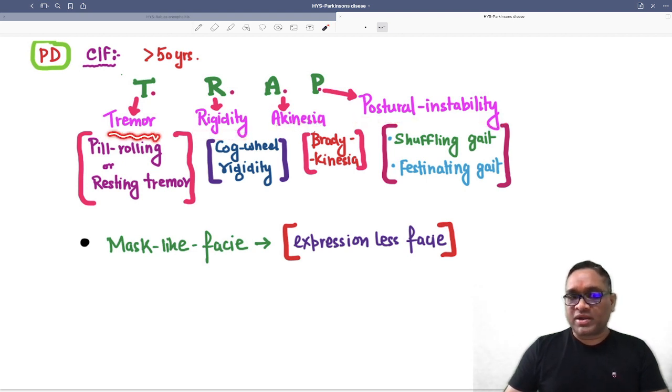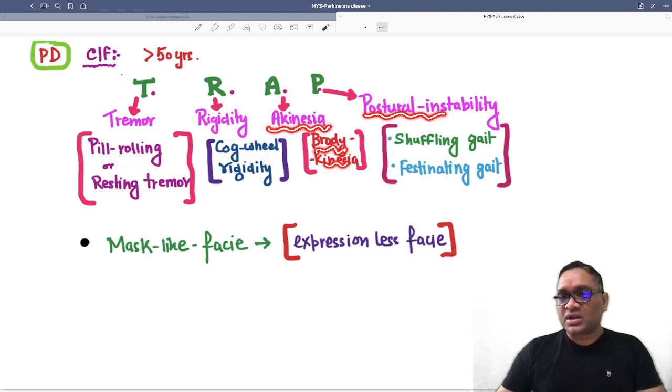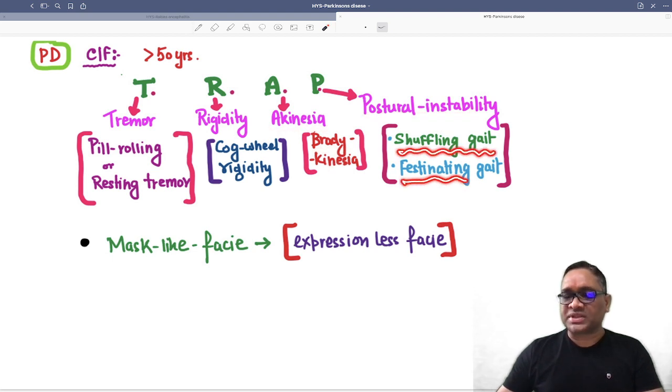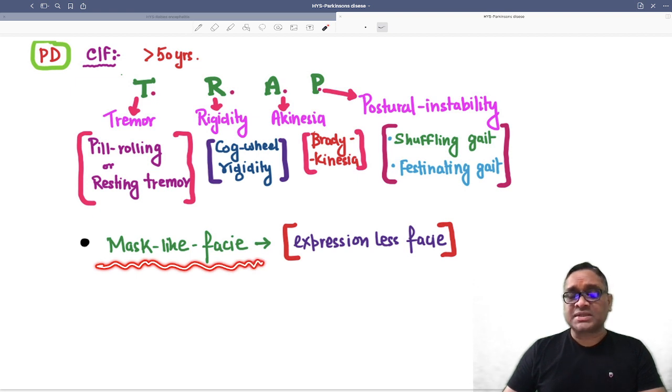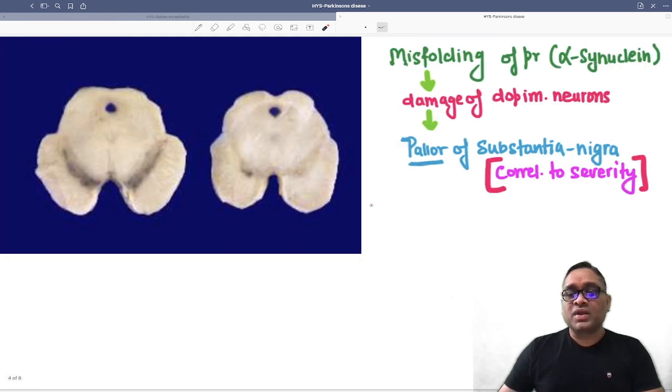What kind of tremor? Pill-rolling tremor or resting tremor. Rigidity will be cogwheel or intermittent rigidity. Akinesia means bradykinesia, and postural instability is shown as a gait called shuffling gait or festinating gait. They will have one more peculiar feature: mask-like facies, where you are not able to see their expression, so expressionless faces are present in Parkinson's disease.